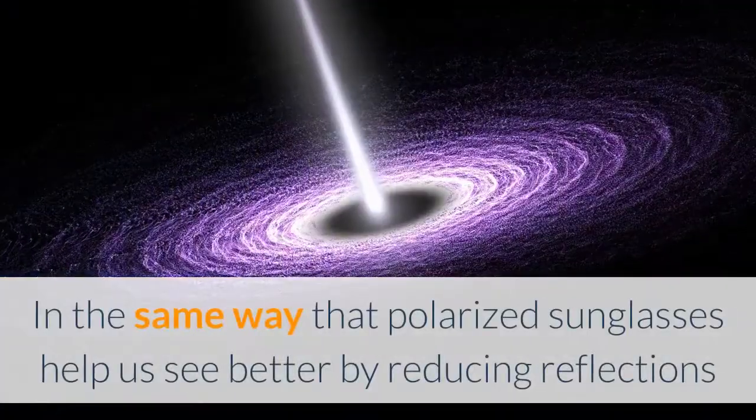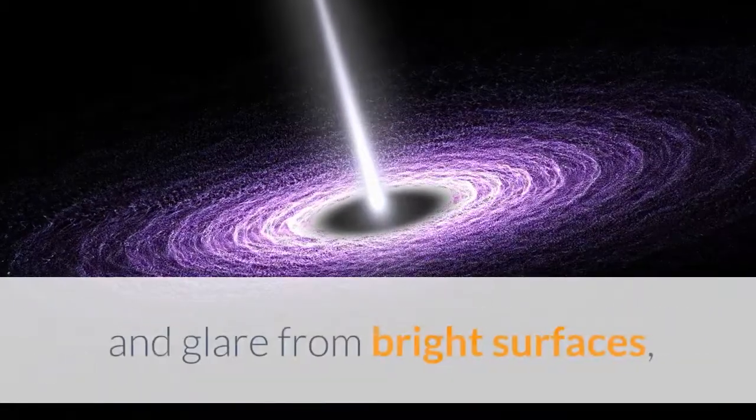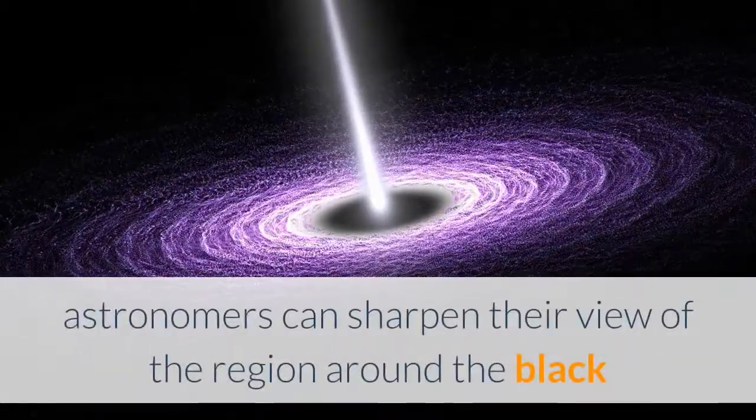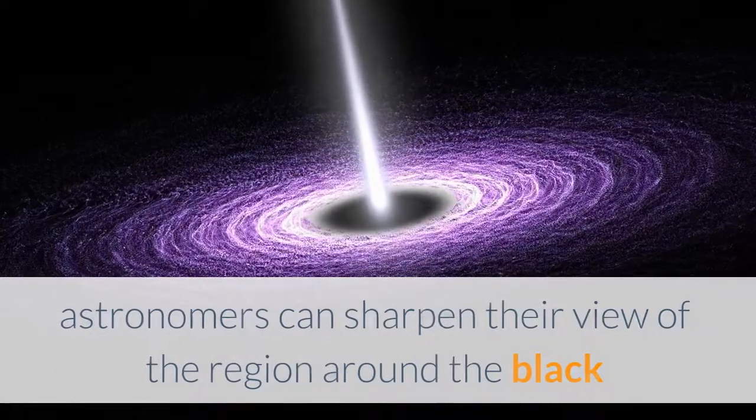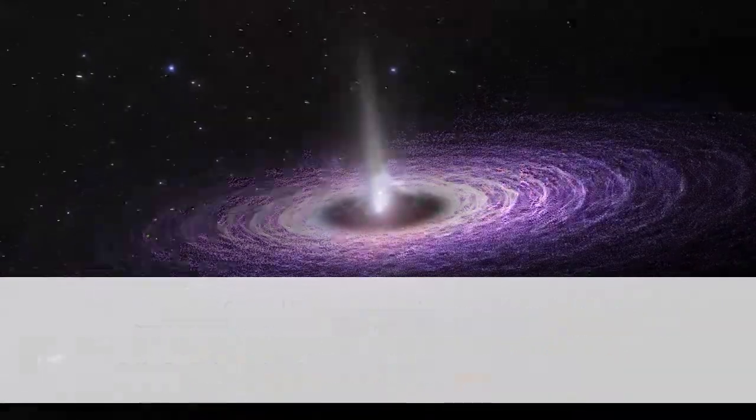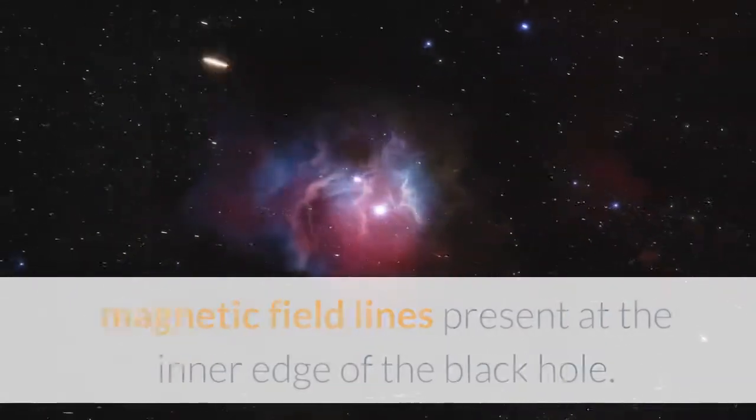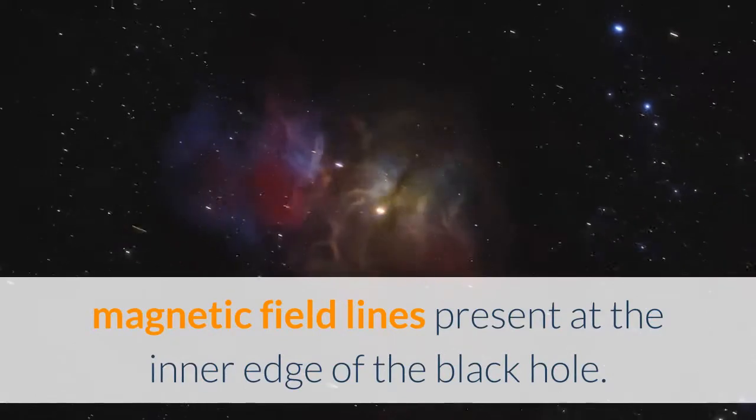In the same way that polarized sunglasses help us see better by reducing reflections and glare from bright surfaces, astronomers can sharpen their view of the region around the black hole by looking at how the light originating from it is polarized. Specifically, polarization allows astronomers to map the magnetic field lines present at the inner edge of the black hole.